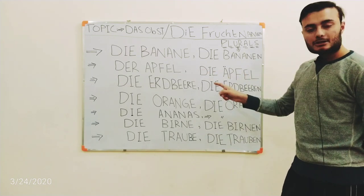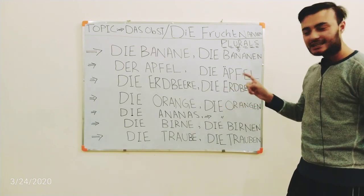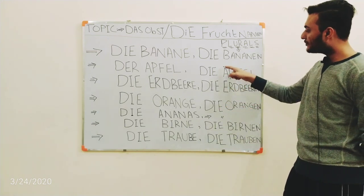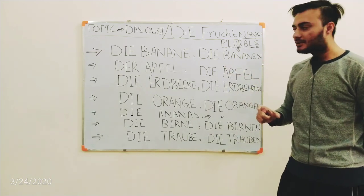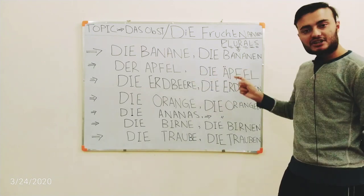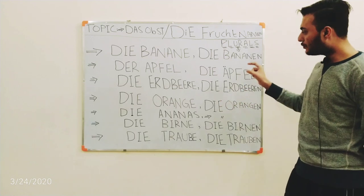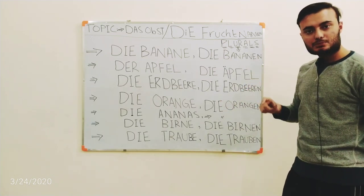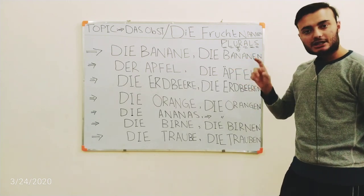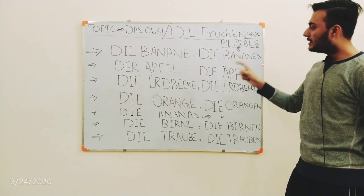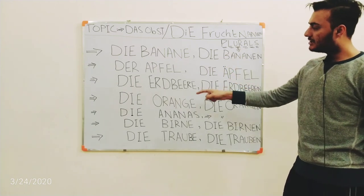So 'der Apfel' is the apple and 'die Äpfel' is the plural. These two dots — the umlaut — play a vital role in changing the pronunciation: 'Apfel' becomes 'Äpfel.' When you hear 'Äpfel,' it is used for plural, and when you hear 'Apfel,' it is used for singular. So 'der Apfel' is the apple and 'die Äpfel' is the apples.